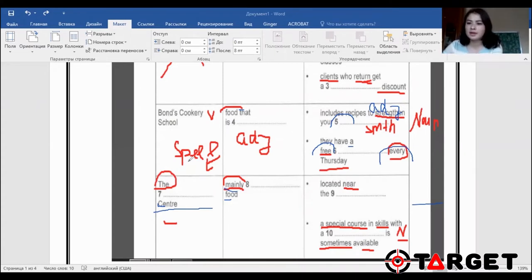Next question number eight, mainly food. So I underlined mainly because they will also have a paraphrase in the track. So mainly what type of food? Again, we're going to write maybe an adjective. Next, located near the, so it's going to be placed definitely because of the word locate. And another keyword is near, so it will also have a paraphrase.